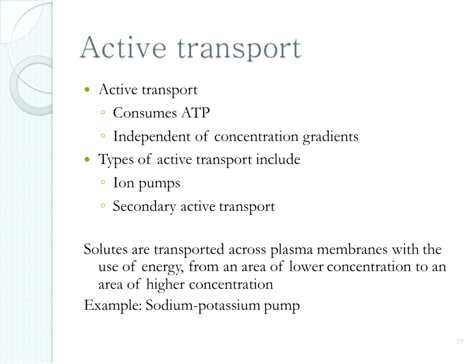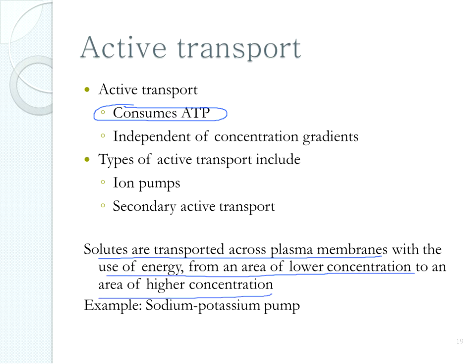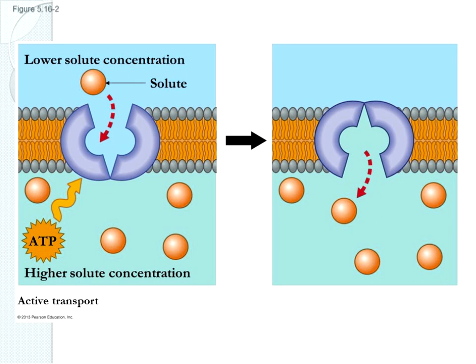The fourth type of transport is active transport, which uses energy. Active transport can pump things against a concentration gradient — from an area of low concentration to an area of high concentration using energy from ATP hydrolysis. We don't have to let things just roll down the concentration gradient; we can build things up to a high concentration.